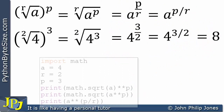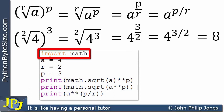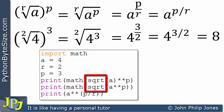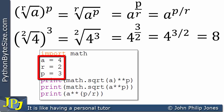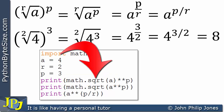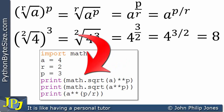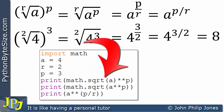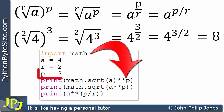Consider the Python program now coming into view. The first line imports the math module to use the square root function. Three lines then set the variables a, r, and p to 4, 2, and 3 respectively, reflecting the values in our example. The first print statement takes the square root of a using the math module's square root function, then raises that result to the power of p.